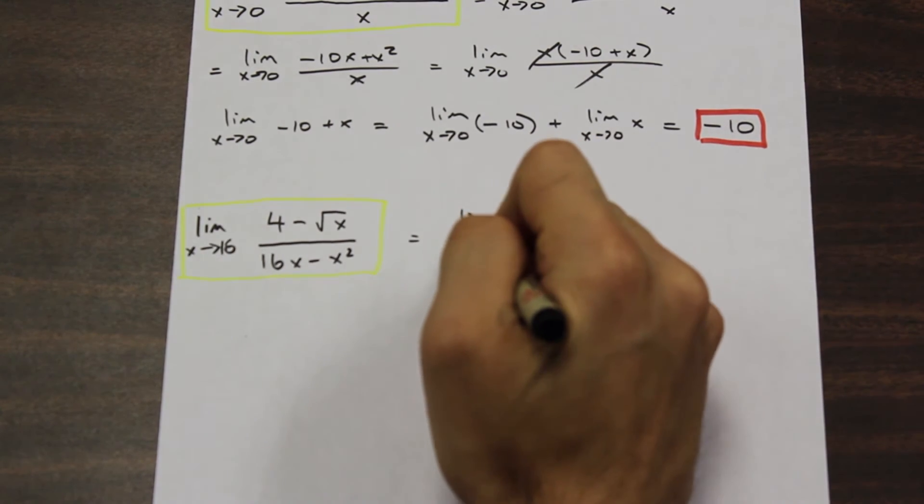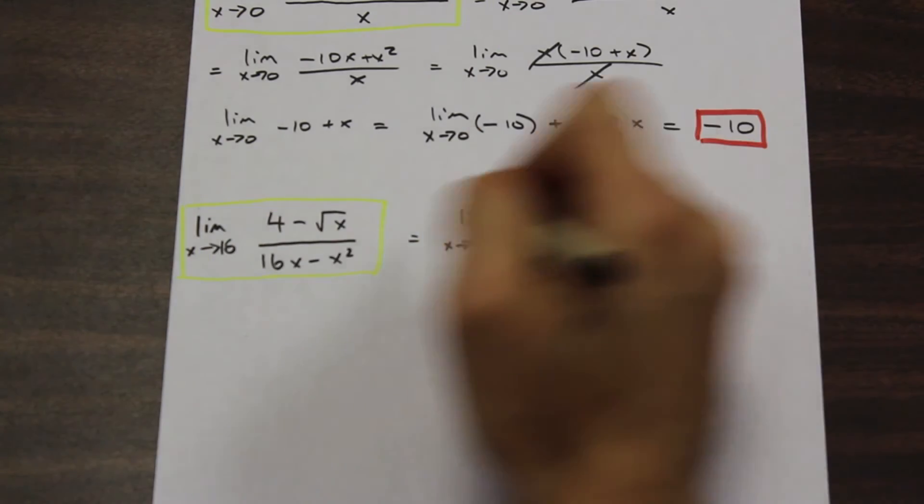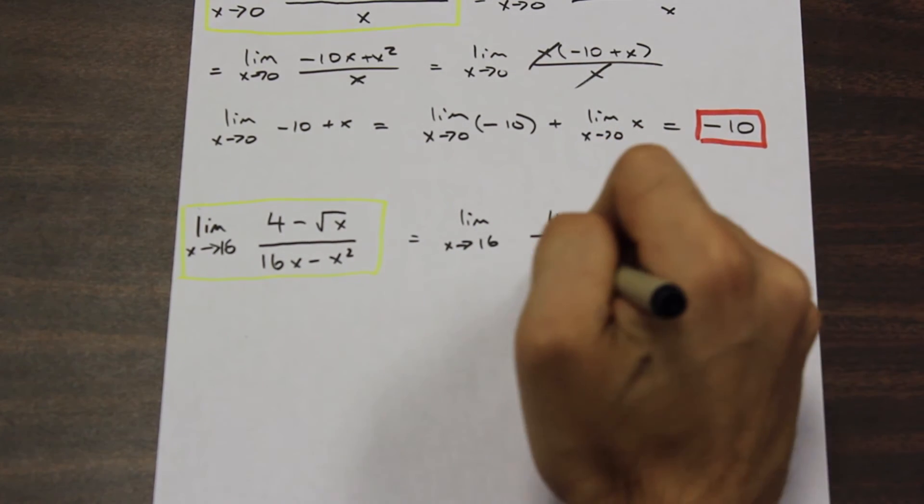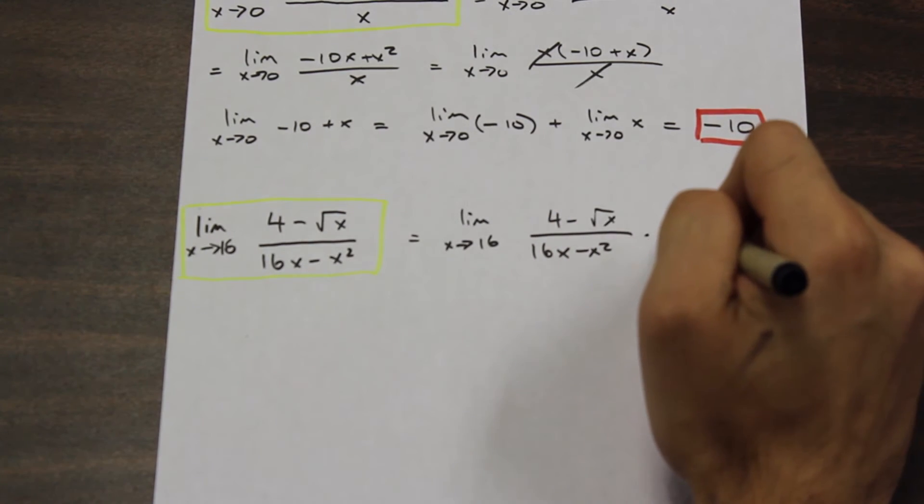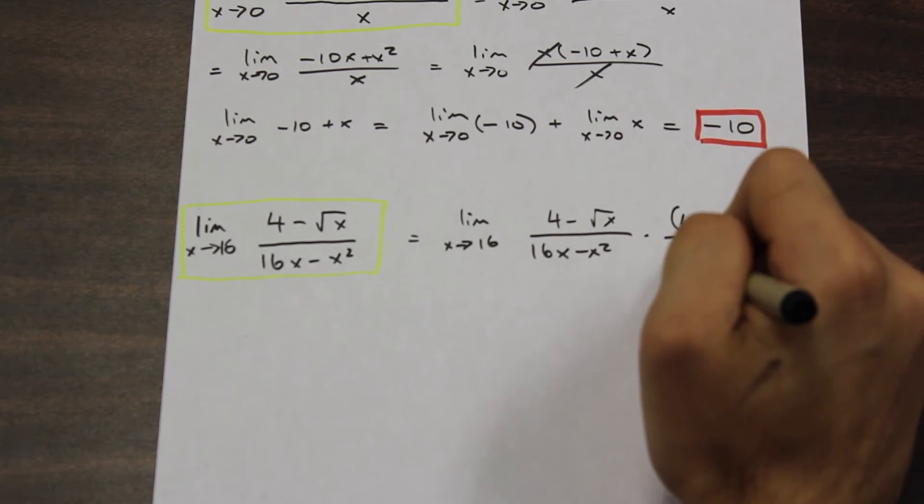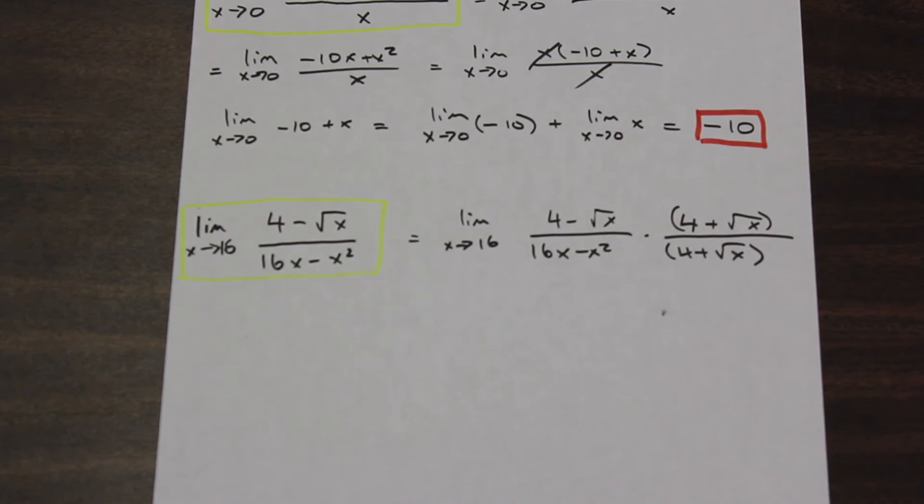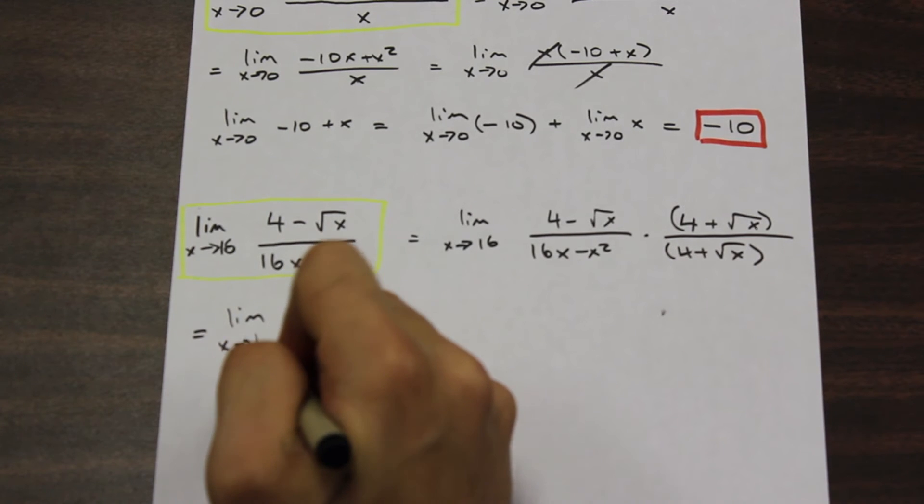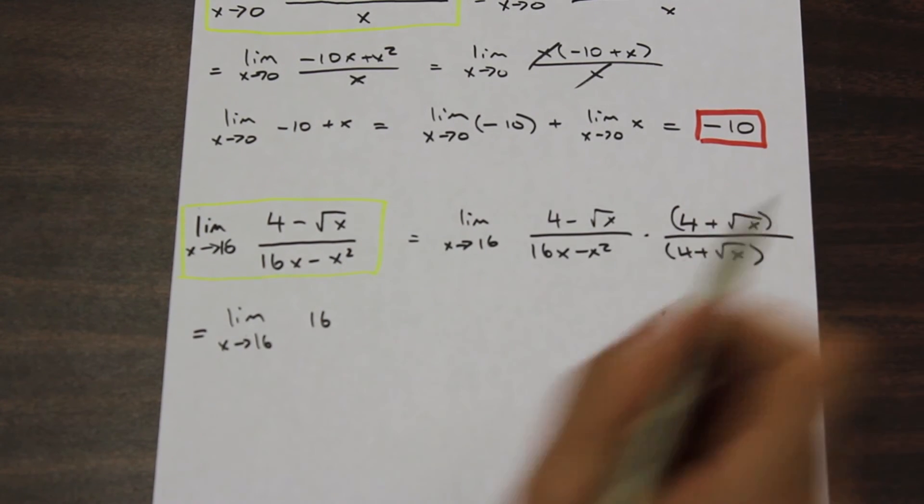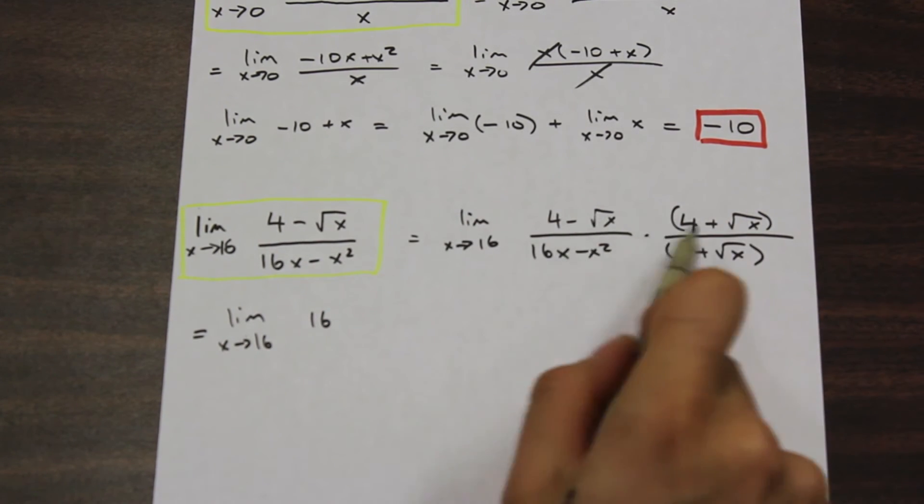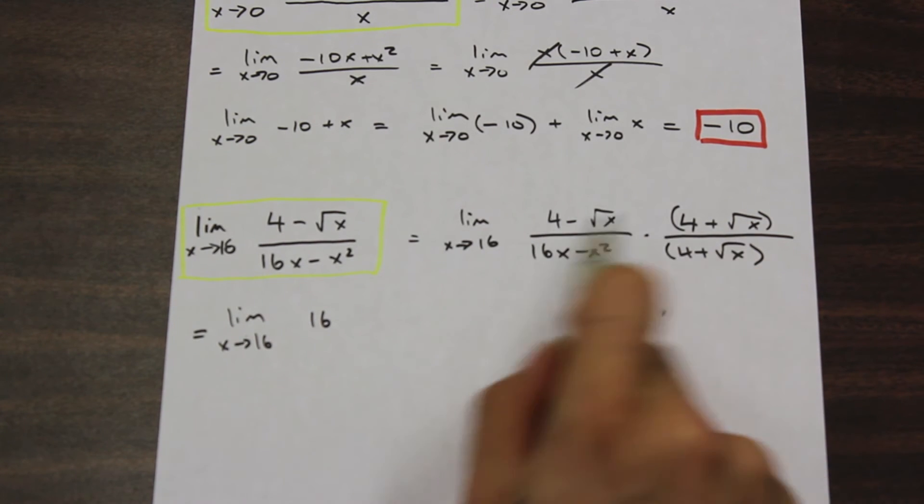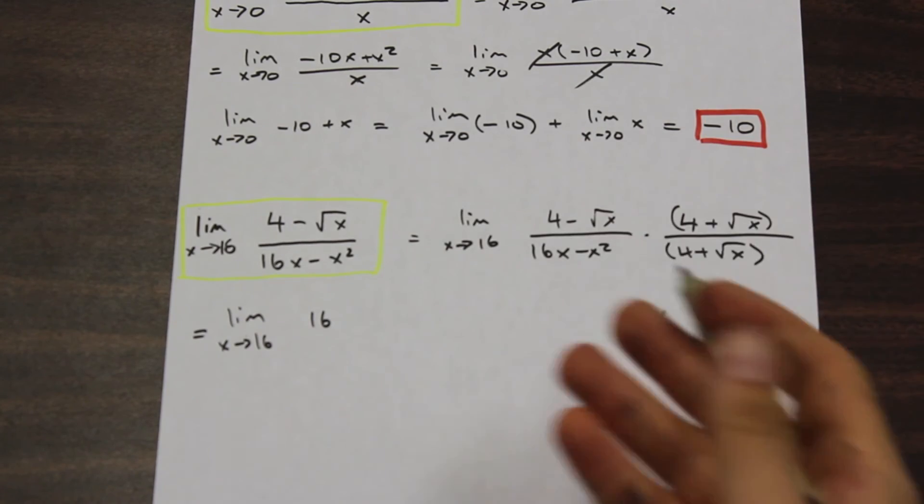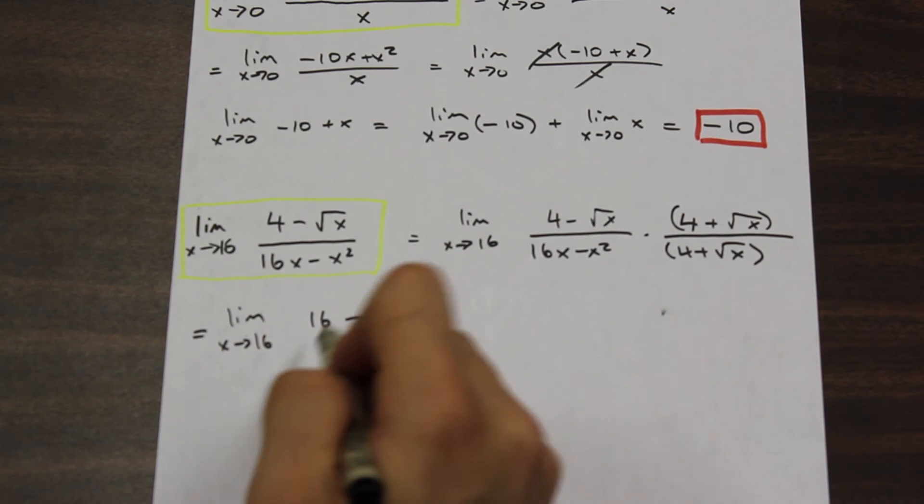So we have, I'm just going to write this over here, always writing our limit, right? Limit as x approaches 16. And we're going to multiply the top and the bottom by this conjugate, the conjugate of this. So 4 + √x. So we have (4 - √x) over (16x - x²), we're going to multiply by (4 + √x)/(4 + √x). And as we can see here, we have a square. And we can rewrite that as 16. And as you can see, if we were to work this out, we would have 16 + 4√x - 4√x - x. So the +4√x and the -4√x are going to cancel, and that's going to give us 16 - x. Perfect. That's exactly what we need, actually.